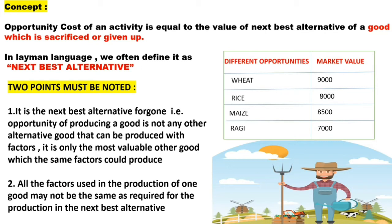Opportunity cost means that when we have to produce any good, as we know resources are limited, and we have to make the best out of it. To produce one thing, we have to sacrifice or give up another good — that is its opportunity cost.